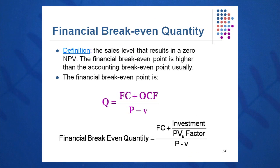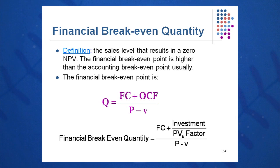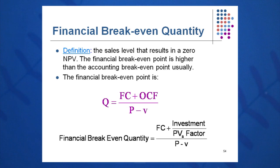Finally, the third breakeven quantity is financial breakeven quantity. Still using the generic form — fixed cost plus OCF over P minus V — financial breakeven quantity is the sales level or quantity that results in a zero NPV. To calculate OCF in this case, it is investment divided by the PVA (present value annuity) factor. So the formula for financial breakeven quantity is: fixed cost plus (investment over PVA factor), divided by contribution margin.